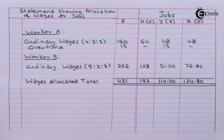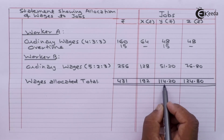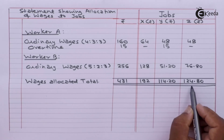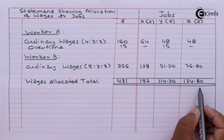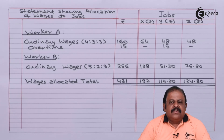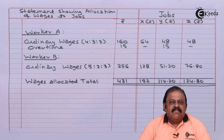To Job X we have allocated Rs. 192, to Job Y Rs. 114.20, and to Job Z Rs. 124.80. In this question we have learned how to allocate wages of two workers to three different jobs depending upon time and efforts allocated by them, and how to treat overtime wages when specifically performed at the request of a particular customer.